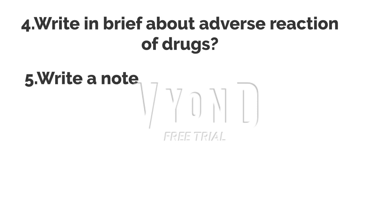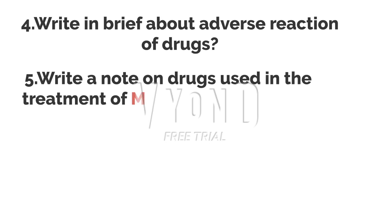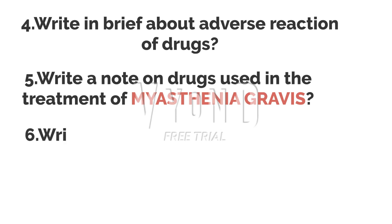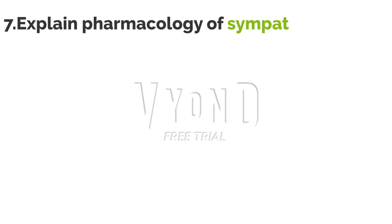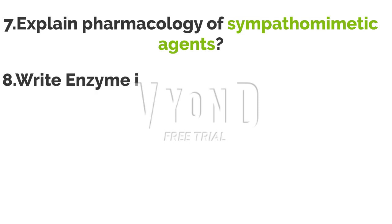The fifth important five-mark question: write a note on drugs used in the treatment of myasthenia gravis — it is an autoimmune disorder causing severe muscle pain. Sixth: write on centrally acting muscle relaxants. Seventh: explain the pharmacology of sympathomimetic agents — remember this. Eighth: write about enzyme induction and inhibition with examples.